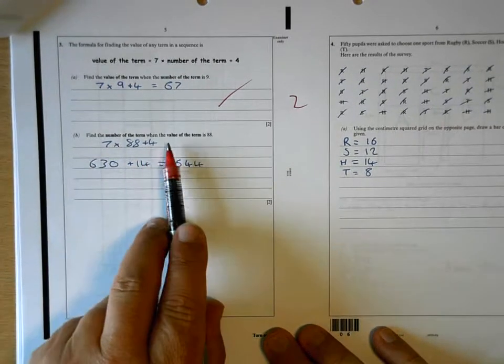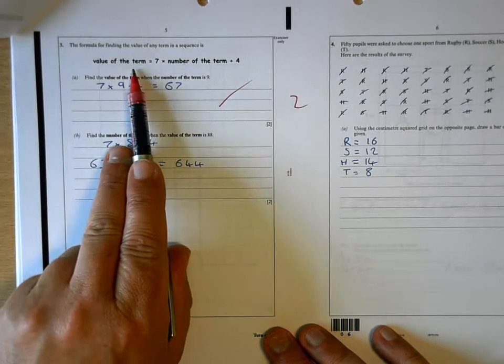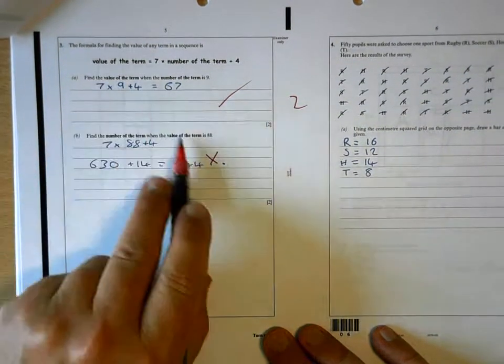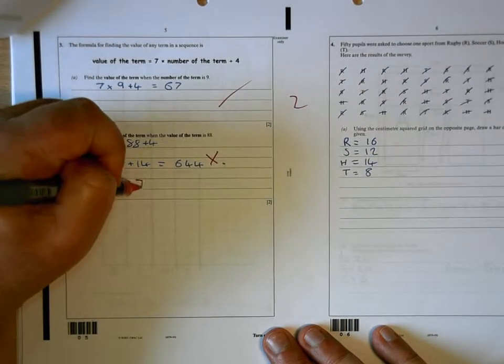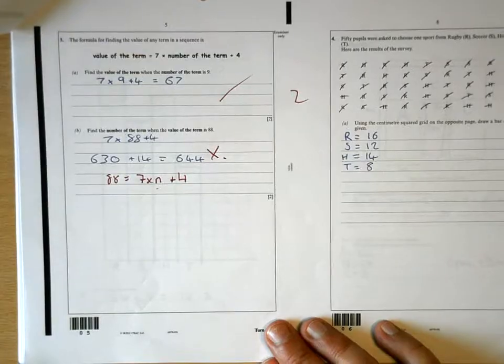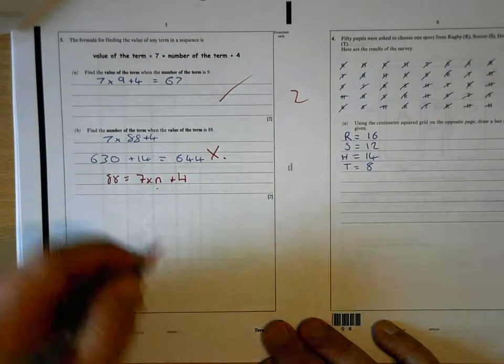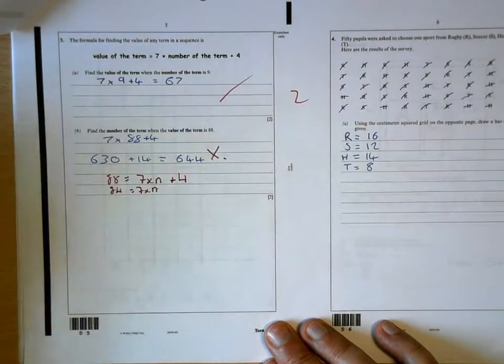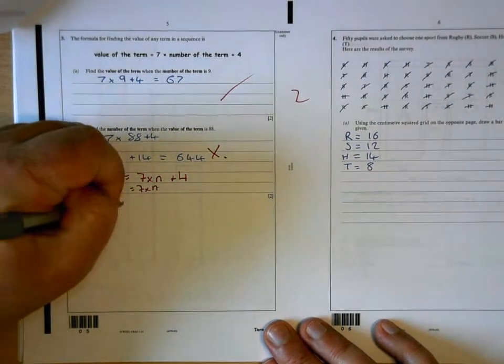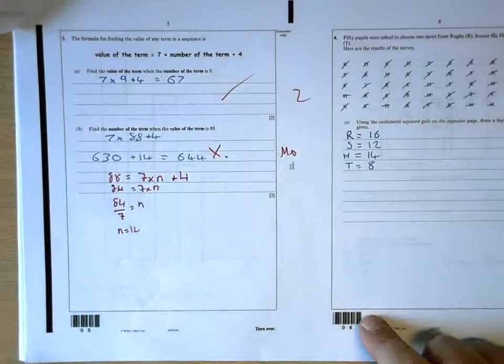And that one's right, good. So total for the first page is 10, 12, 14, 16. 67 is correct. And then for this one, what you've done there is wrong. What they're telling you is that the value of the term is 88. And if you look at the formula, the value of the term is on that side. You've put the number of the term equal to 88. So what you need to be doing there is setting up an equation. So the value is 88 equals 7 times the number, that's what we want to work out, add 4. And then from there you would solve it like an equation. So you would take the 4 and get rid of it by subtracting from both sides. So you'd end up with 84 is 7 times n. And then to get the n on its own, you would need to divide by 7 to both sides. So 84 divided by 7 would be n, and then from there n would be 12. So you wouldn't get any marks for that.